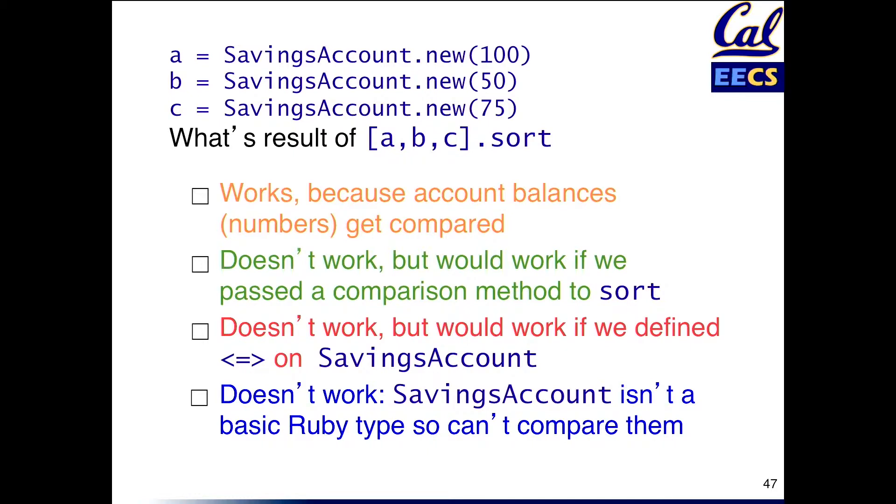Does it work because the account balances are numbers and we know how to compare them? Does it not work but if we added a comparison method or if we passed a comparison method to the sort method then it would work? Do we say it doesn't work but it would work if we define the spaceship operator for savings accounts or it doesn't work because since this isn't a basic Ruby type there's no built-in way to compare them with the operator?